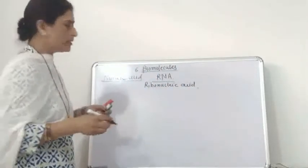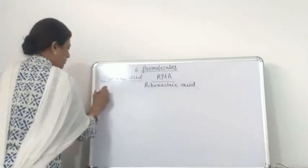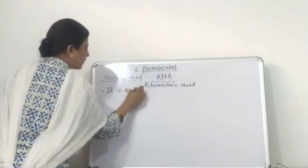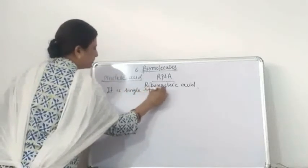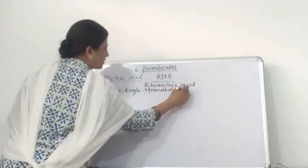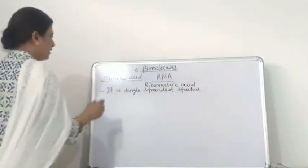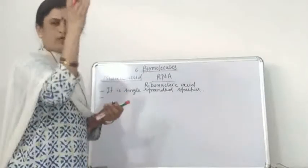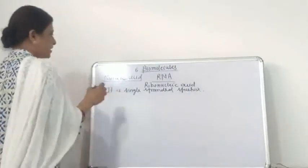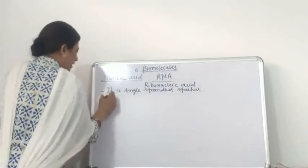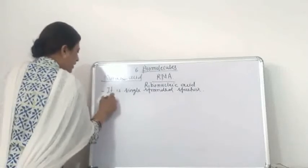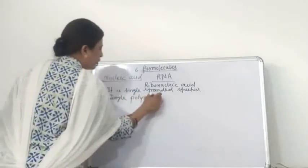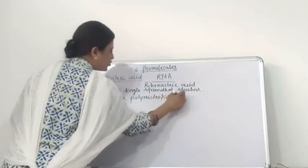This ribonucleic acid is a single-stranded structure. It consists of only one strand, and this strand is made up of a number of nucleotides. They are joined with each other with the help of a phosphodiester linkage or bond. It means that a single polynucleotide chain is present.